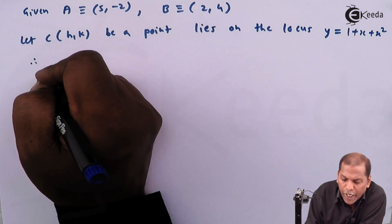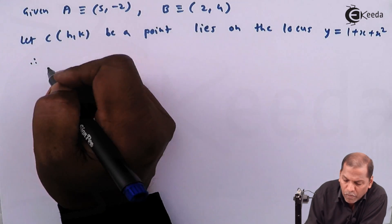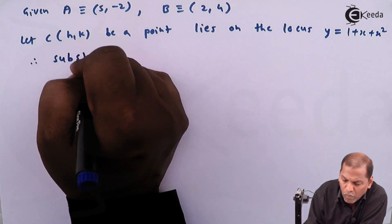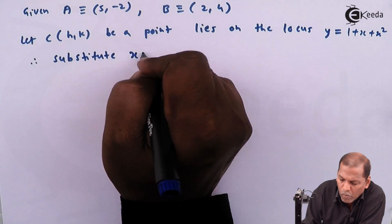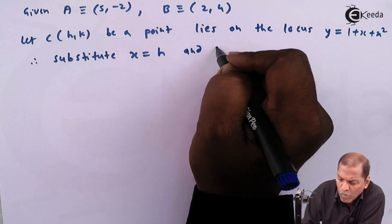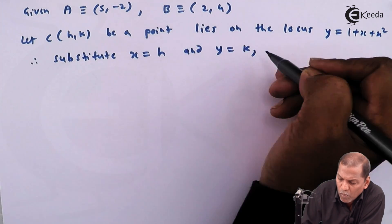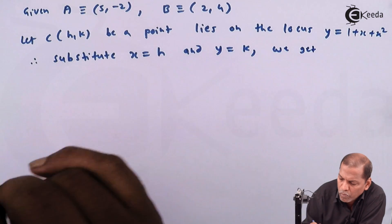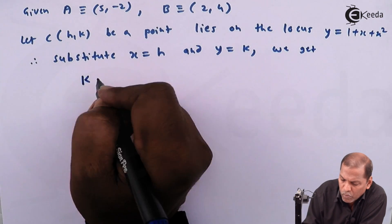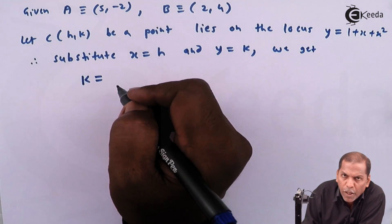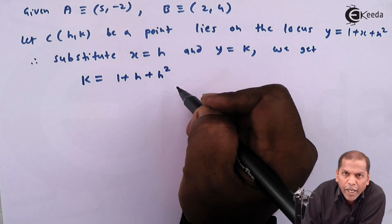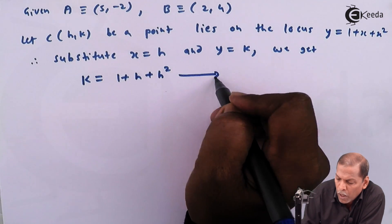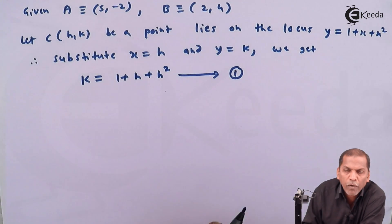Therefore, substituting x = h and y = k into the locus equation, we get: k = 1 + h + h². Let us denote this as equation 1.